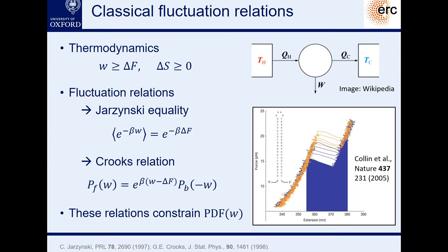Fluctuation relations are a very intriguing concept in that they take thermodynamics a step further and make some equalities out of what we usually know from thermodynamics as inequalities. In particular, what we have in thermodynamics is that if we do work on a system, the amount of work we need to do must be bigger than or equal to the change in the free energy of the system, and entropy must always increase. Those relations are fundamental to the operation of all kinds of heat engines and fridges, but we always have to deal with inequalities.